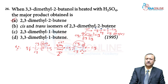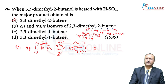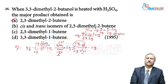One methyl group is on the second carbon atom and the third methyl group is on the third carbon atom — that's why it is called 2,3-dimethyl. With 4 carbon atoms it is butene, and the double bond on the second carbon makes it 2-butene (2,3-dimethylbut-2-ene).